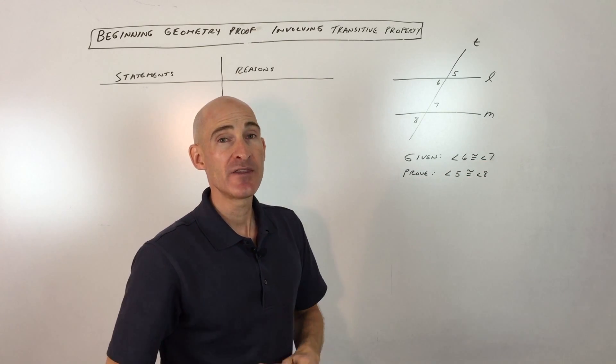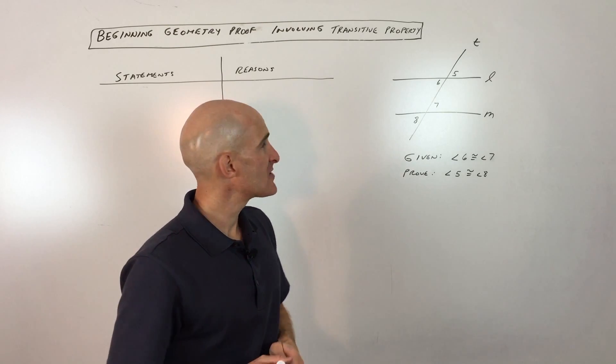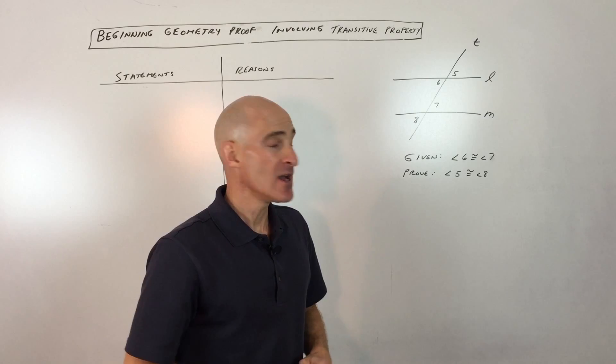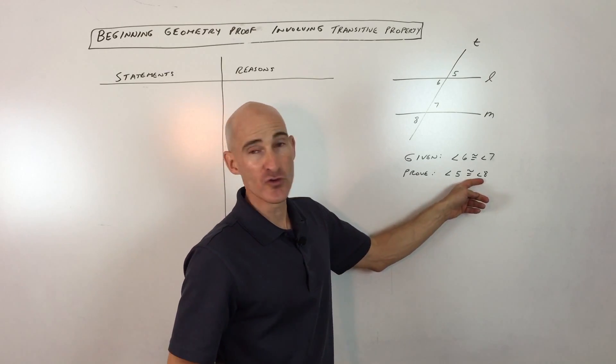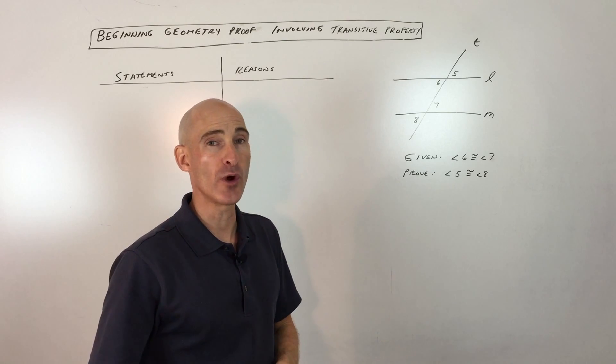So first things first, the givens, you want to think of those as clues or hints. So they give us that clue or hint to help us along so that we can then go ahead and prove this. If we didn't have any information whatsoever, we wouldn't have anything to go on and we wouldn't have a starting point.